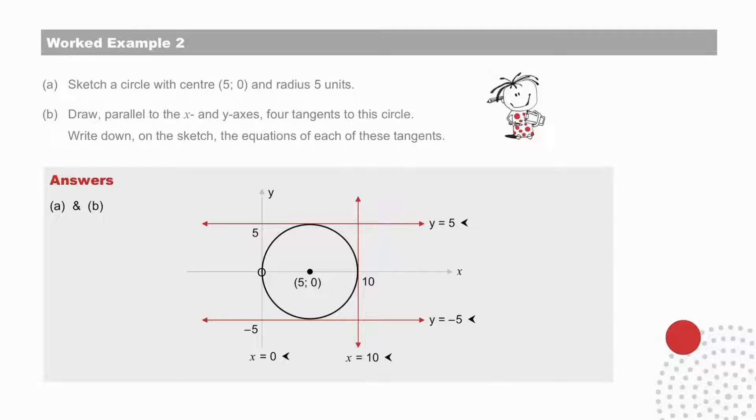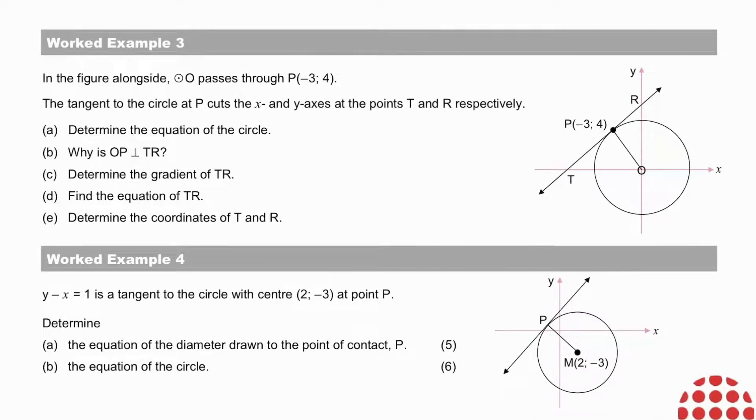Pause to check your answers in worked example 2. The horizontal tangents are y equals 5 and y equals minus 5. The vertical tangents are x equals 10 and x equals 0, the y-axis. Now pause to do these two examples.